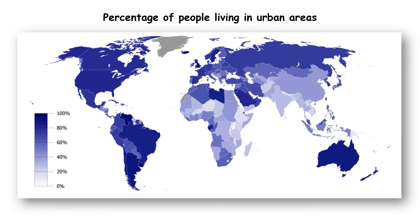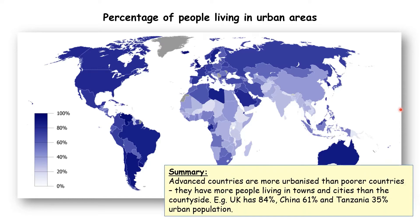This map shows the percentage of people living in urban areas now. The darker the colour, the more people are living within towns and cities. It's mainly the advanced countries that are urbanised — Australia, New Zealand, Western Europe, North America, and many countries of South America. The advanced countries are more urbanised than the LIDCs and EDCs. The UK, an advanced country, has 84% of people in towns and cities; China, an EDC, has 61%; and Tanzania, an LIDC, has 35% urban population.